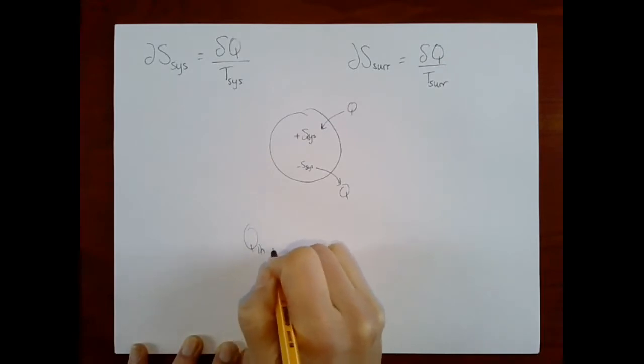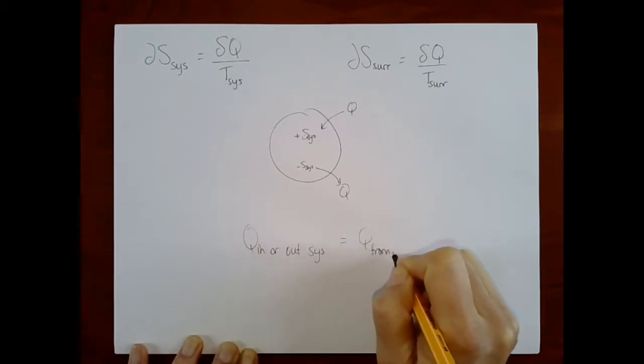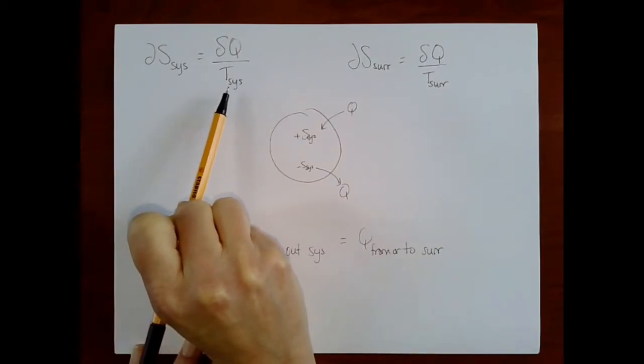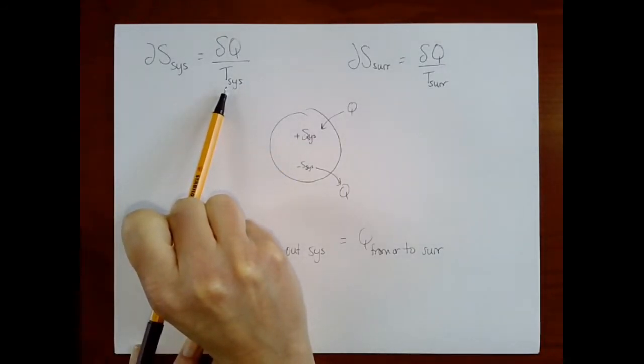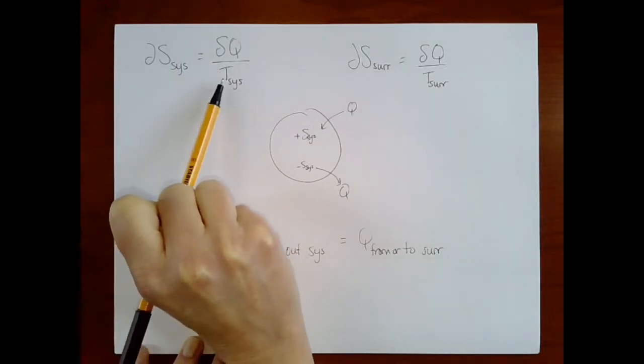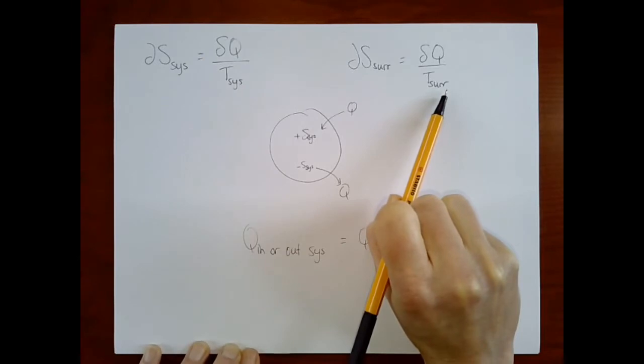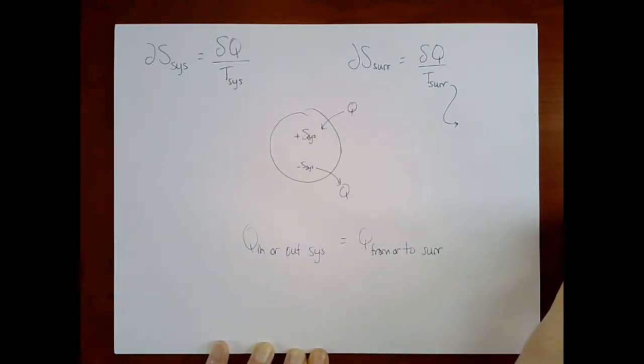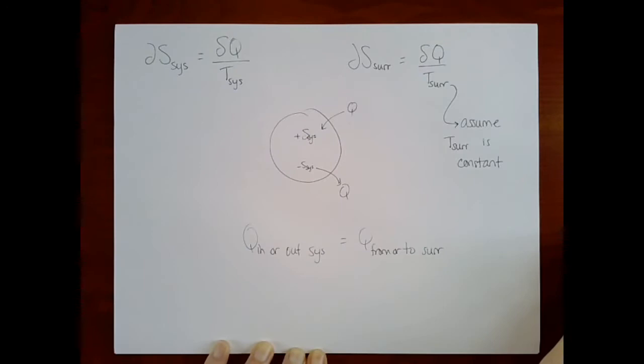So the Q in or out of the system is going to be equivalent to the Q from or to the surroundings. For the system it may be the case that the temperature of the system is changing during this process. Actually, for many processes it's very likely, and so if the temperature of the system is changing we have to be careful about that when we go to integrate this equation out—it may not be the case that we can pull the temperature out of the integral. For the surroundings, however, where it would really be impossible to know how the temperature is changing, it's often the case that the surroundings are quite large, and just like the heat reservoir and the cold reservoir that we use for our heat engines, we're going to most often take the assumption that the temperature of the surroundings is constant. And for many problems that's a pretty good assumption.